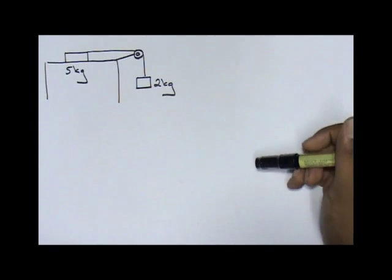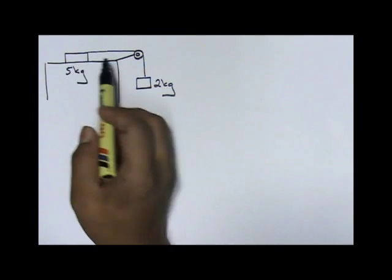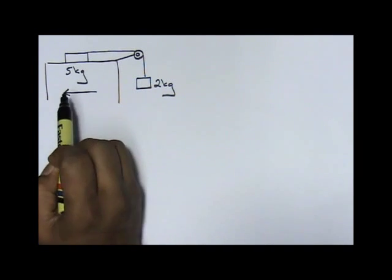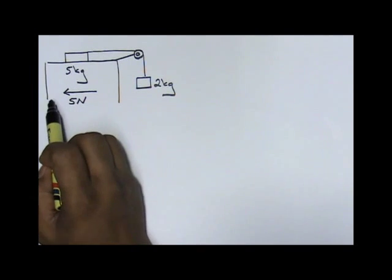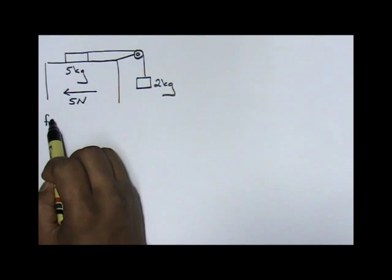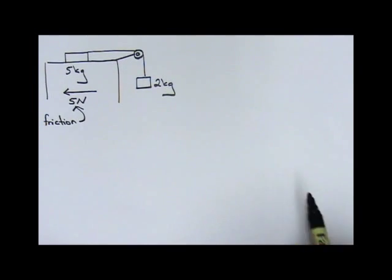I'm going to spice up the question a little bit. This five kilogram wooden block will also experience a frictional force of five newtons. This is friction and the value for friction is given to you as five newtons.